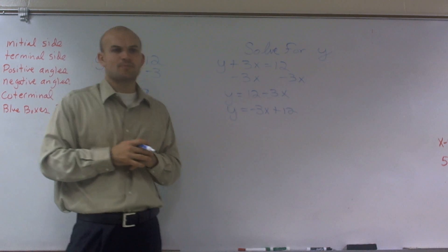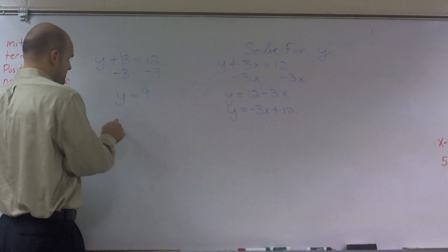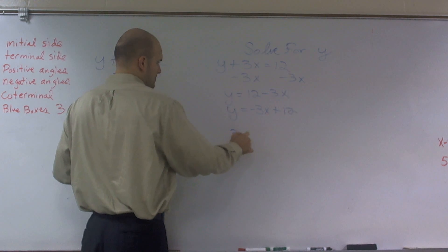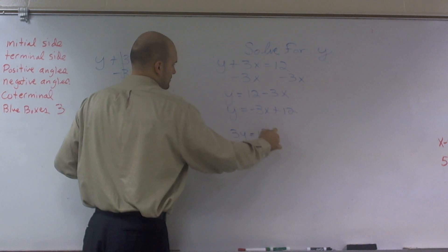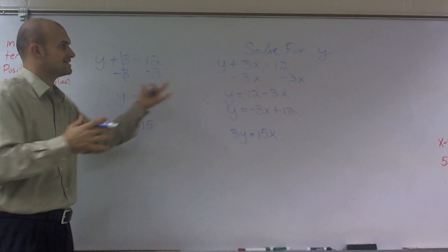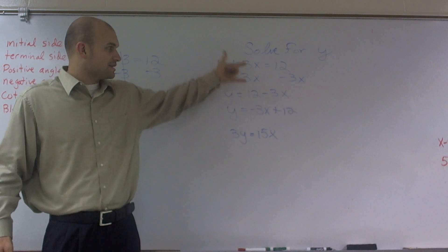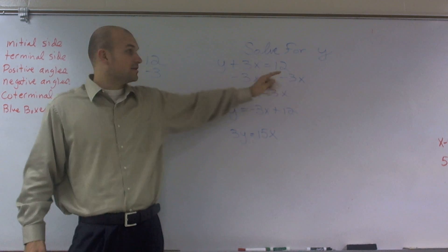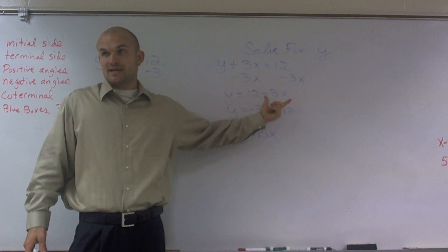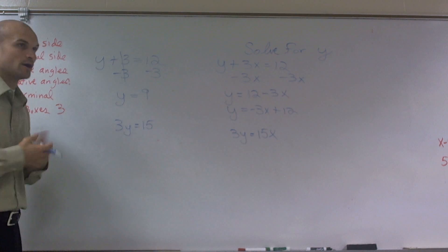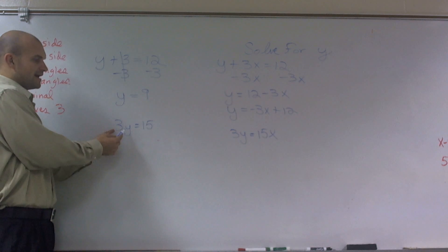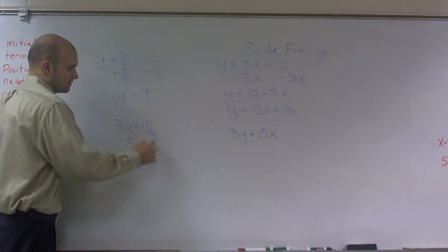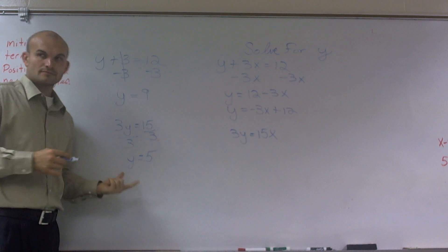Then we worked on two other problems, which were 3y equals 15, and 3y equals 15x. If you notice, when you had addition or subtraction with a variable, you cannot combine. You guys notice that? 12 minus 3x is still 12 minus 3x. You can't combine them. However, let's look at what happens when we have multiplication and division. Here I have multiplied by 3 times y. So to get my y by itself, I need to divide by 3. Y equals 5, right?